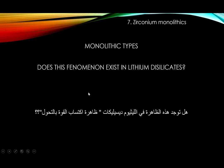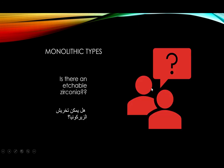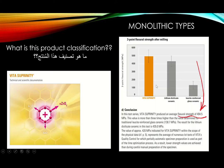Transformation toughening does not exist in lithium disilicate. The question of whether there is an etchable zirconia will be discussed in its own section later in this lecture.